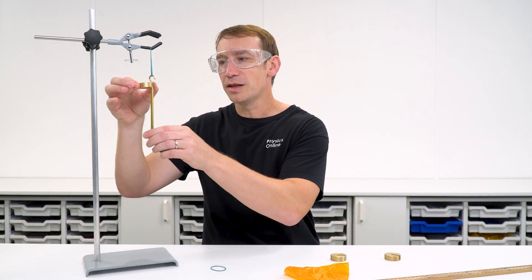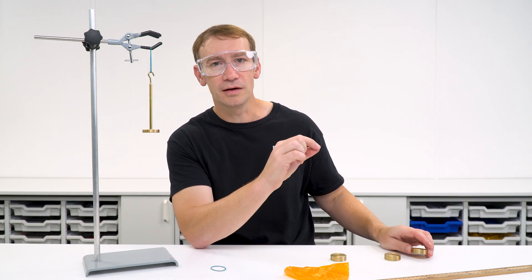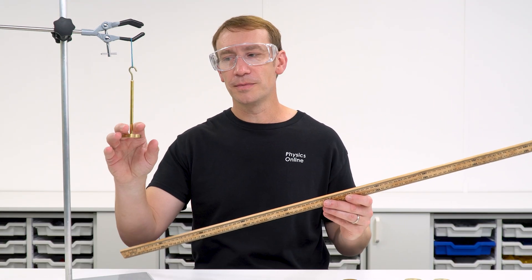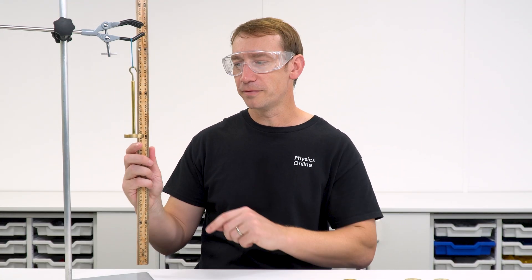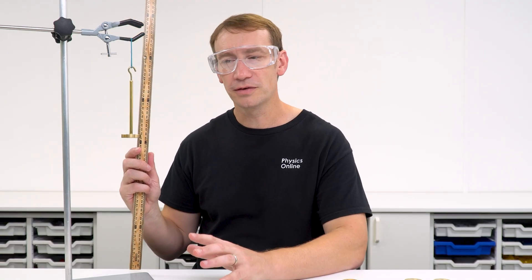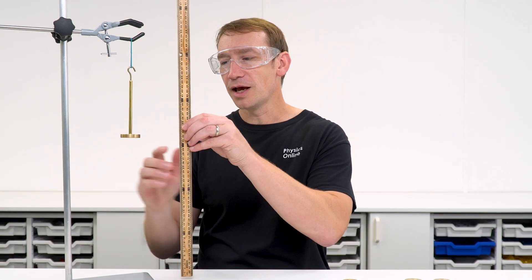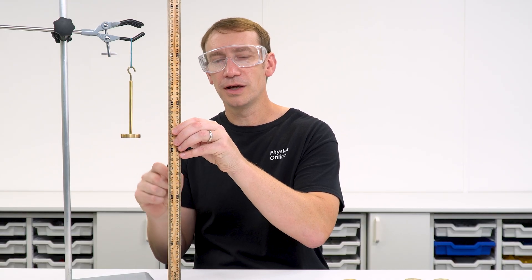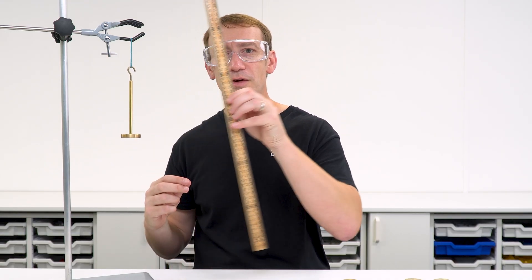And in actual fact the way that rubber behaves is it has a different loading curve to an unloading curve. And of course when you're taking measurements you want to make sure that the ruler is held vertically so you might want to ensure that you've got a set square to do that. And also you might have a marker somewhere on the mass that points to the scale on the ruler to reduce any errors in those measurements.